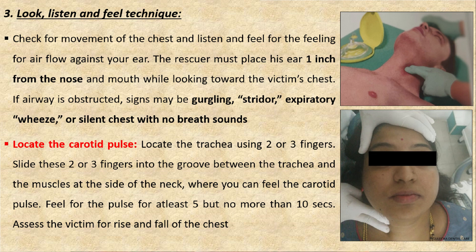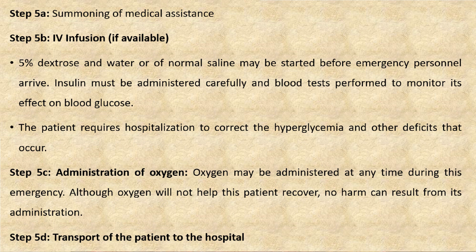Feel for the pulse for at least five seconds but not more than ten seconds, simultaneously assessing for rise and fall of the chest. Step five is summoning medical assistance. If available, IV infusion can be started — 5% dextrose or normal saline, with normal saline preferred since the patient is already hyperglycemic. IV insulin can be given once the medical team arrives and should be administered carefully. The patient will ultimately require hospitalization to correct the hyperglycemia and other deficits.